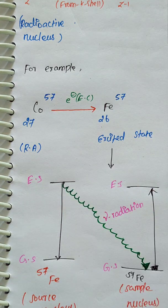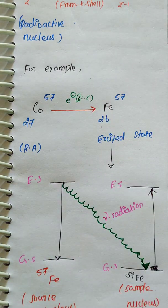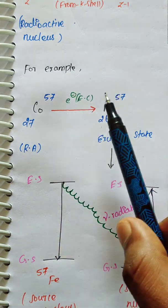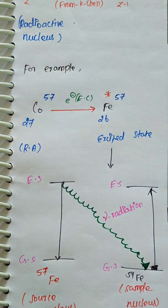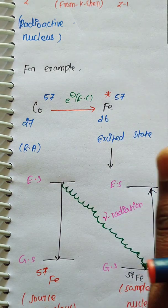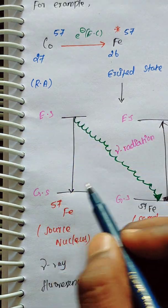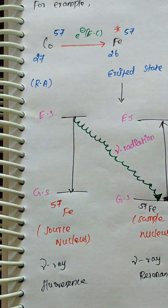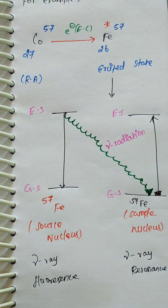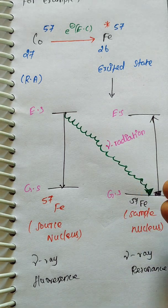So cobalt-57 is converted into radioactive iron. This iron is in an excited state — it is not the ground state, it is the excitation state of iron. When iron comes from the excited state to the ground state, it absorbs the energy and emits radiation. This radiation is the gamma ray. So if we look at the sample — which is an iron-57 containing component — the gamma radiation emitted from the source is absorbed by the sample, and the sample undergoes excitation to the excited state.